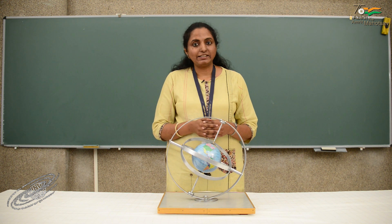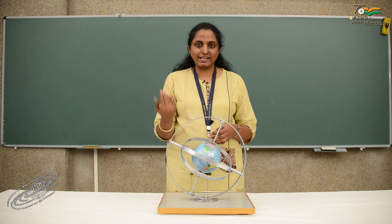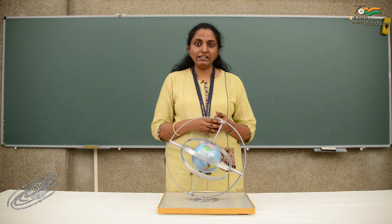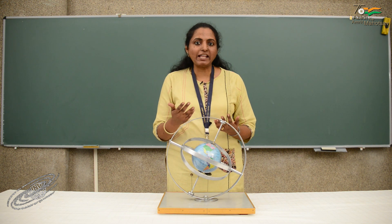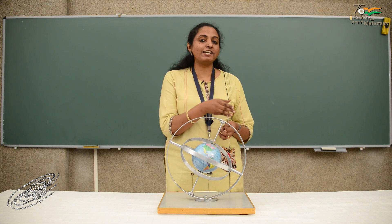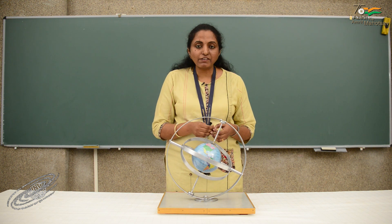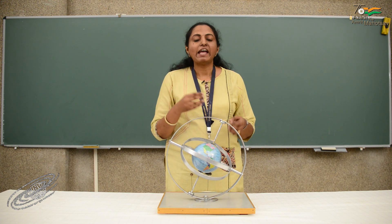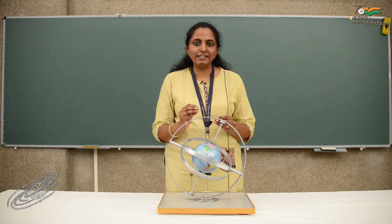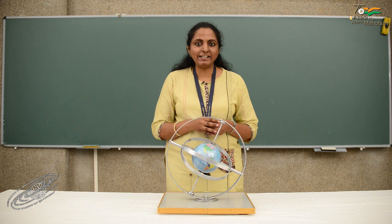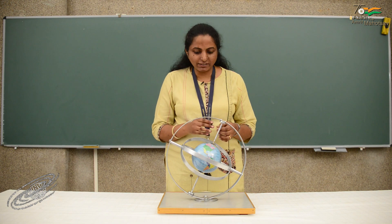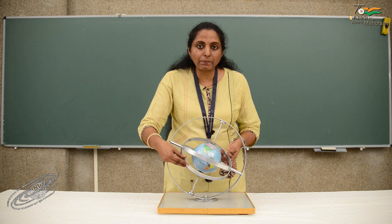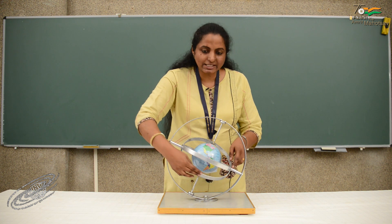We all know that the earth goes around the sun — it revolves around the sun. As the earth revolves around the sun, we feel that the sun itself is moving from one constellation to another. We feel that the sun is actually moving in a path, and this path of the sun is called the ecliptic. In reality, this is actually the orbital plane of the earth, and that ecliptic is represented by this circle.